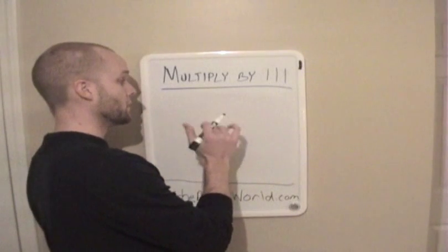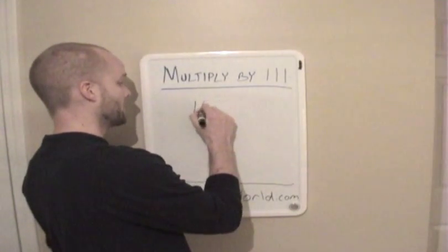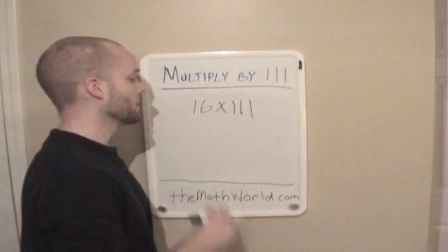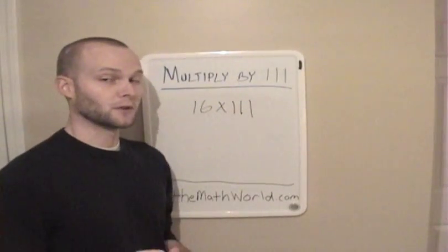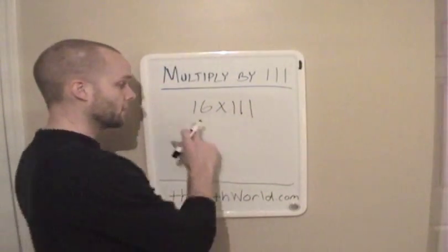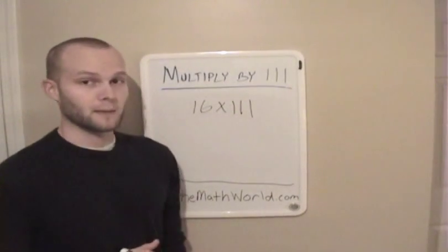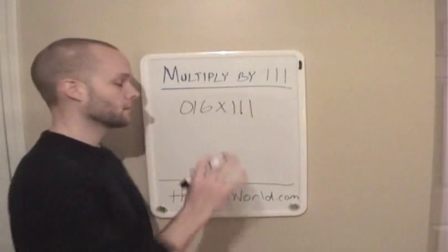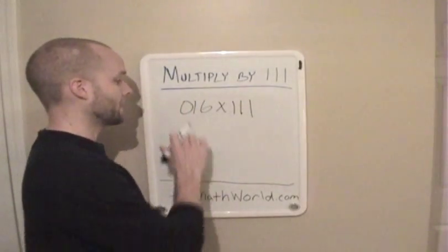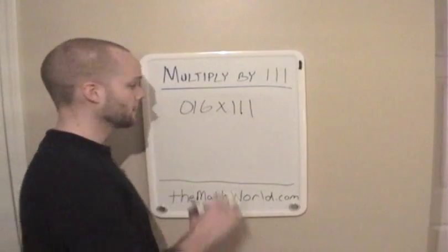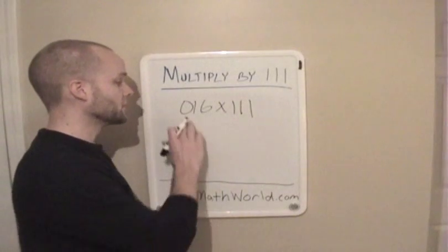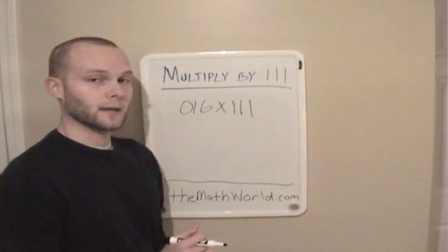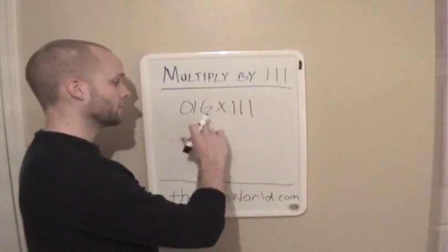It's very important to know that anytime you multiply a number by 111, you have to assume that you're multiplying by a three-digit number. So for instance, if you multiply by 16, you want to actually look at it like it's 016. So 16, to make it a three-digit number, is 016. This is how we're going to take a look at how to multiply numbers by 111.